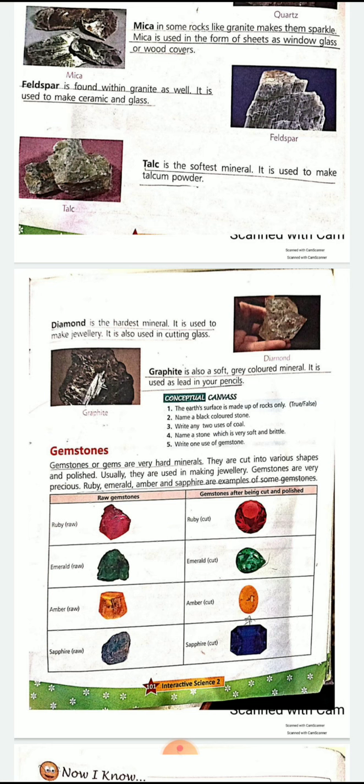Graphite is used as lead in your pencil. So when we write with a pencil, the middle inside the wooden part — there is a gray something inside from which we write — that is graphite. Now, can you name a black colored stone and write any two uses of coal?